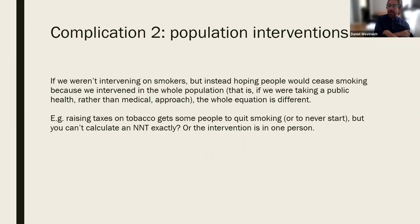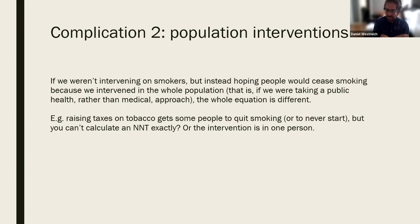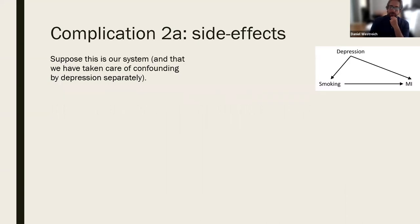And if instead we took a public health rather than a medical approach — for example, raising taxes on cigarettes — some people will quit smoking, though not many because smoking is highly addictive. In that case it's unclear how you would even calculate a number needed to treat, since the entire population is your denominator. Then there's the issue of side effects, which I call Complication 2a.